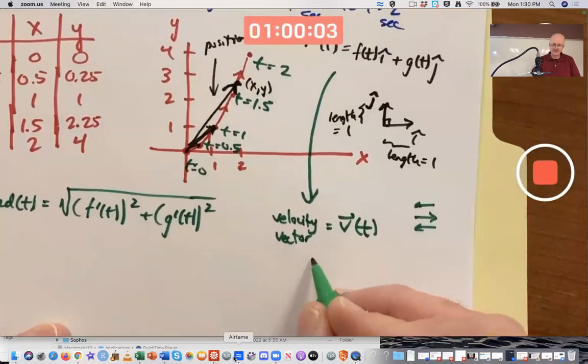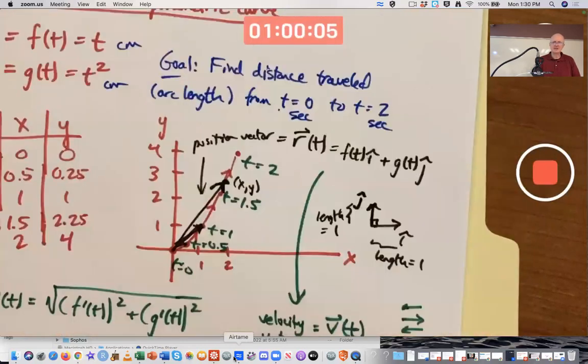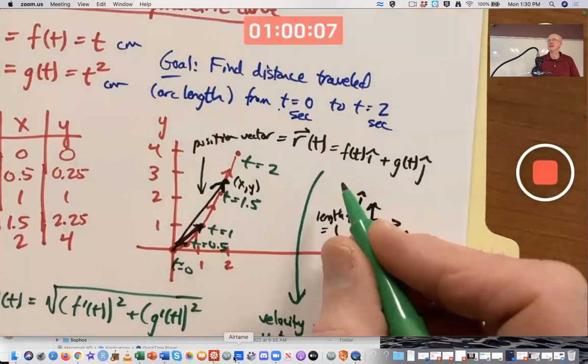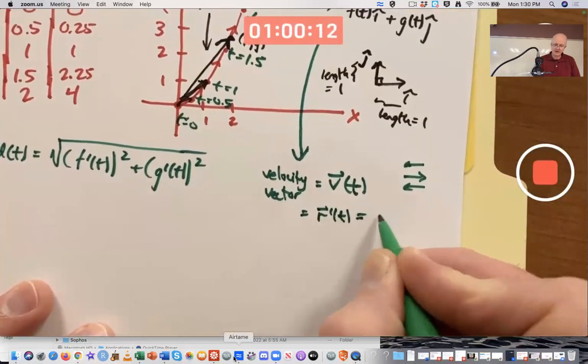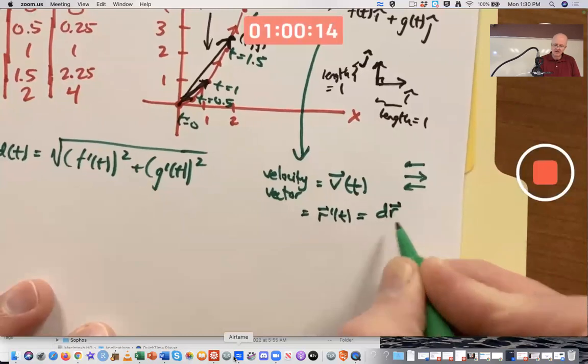But what is this velocity vector? Well, if that's a position, maybe it should be its derivative. Yeah, that's what it is. It's r prime of T, or if you prefer in Leibniz notation, dr dt.